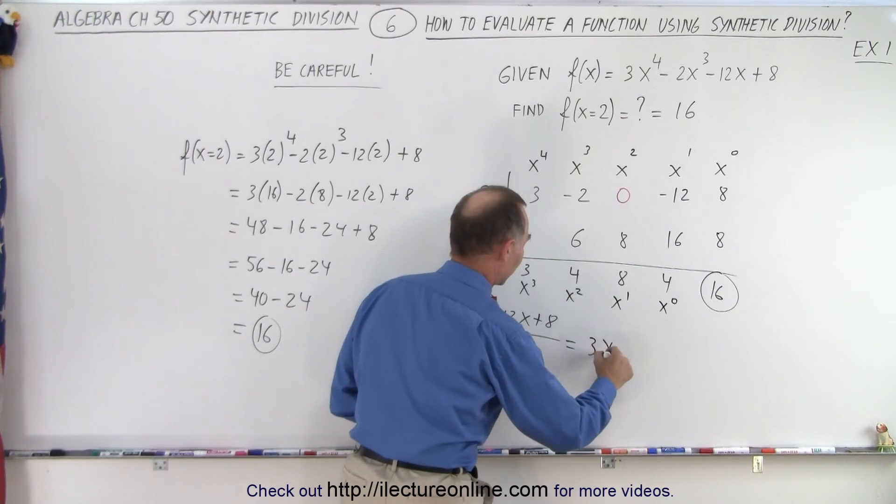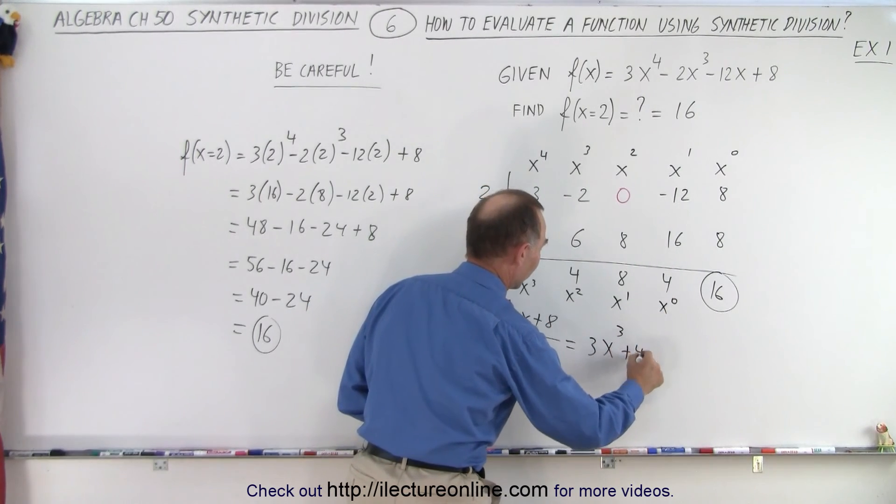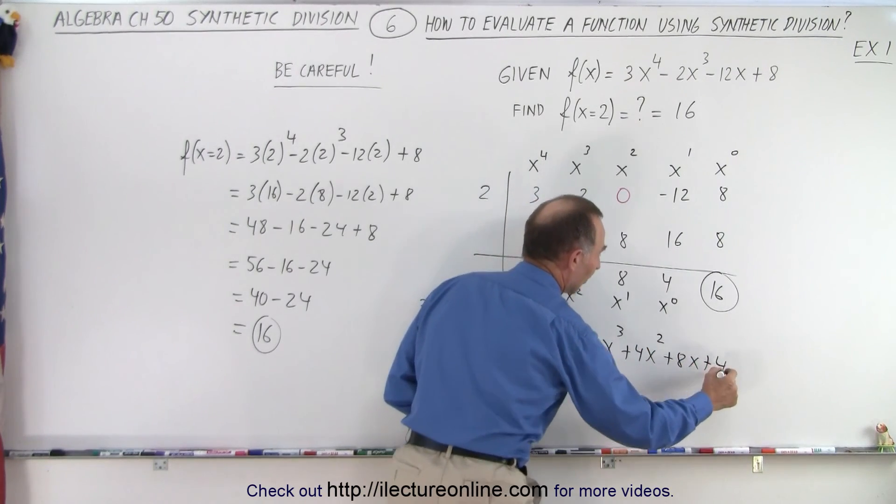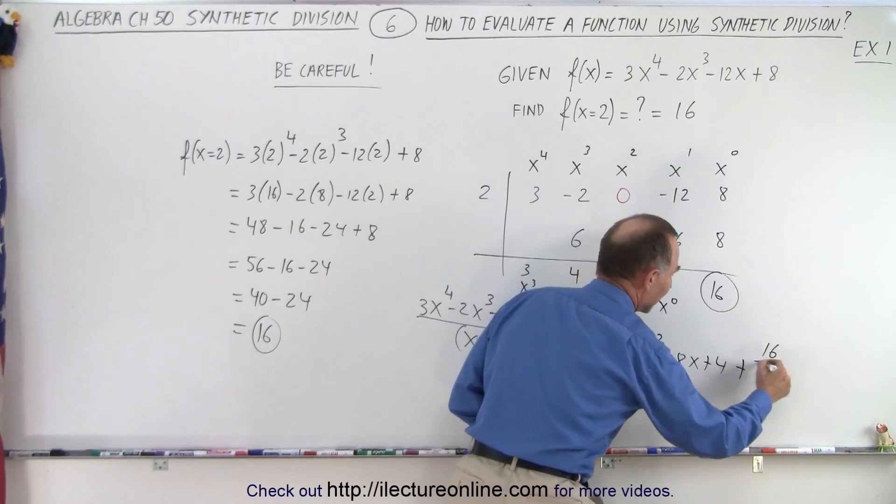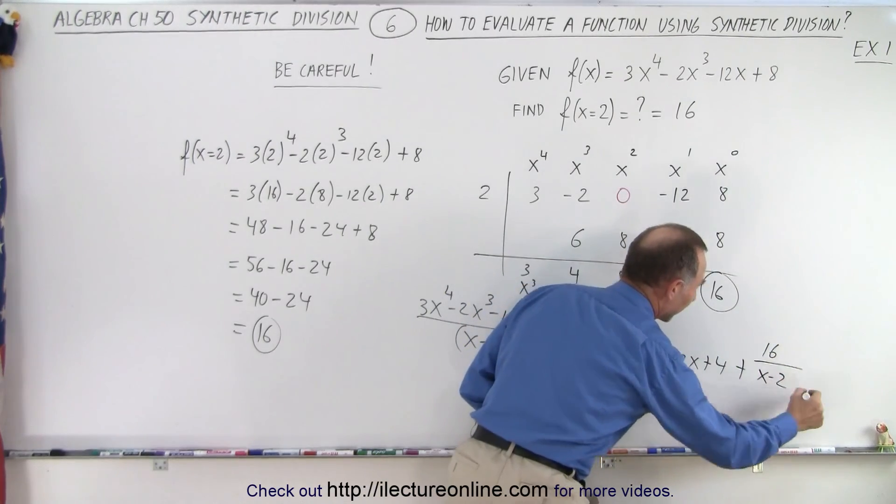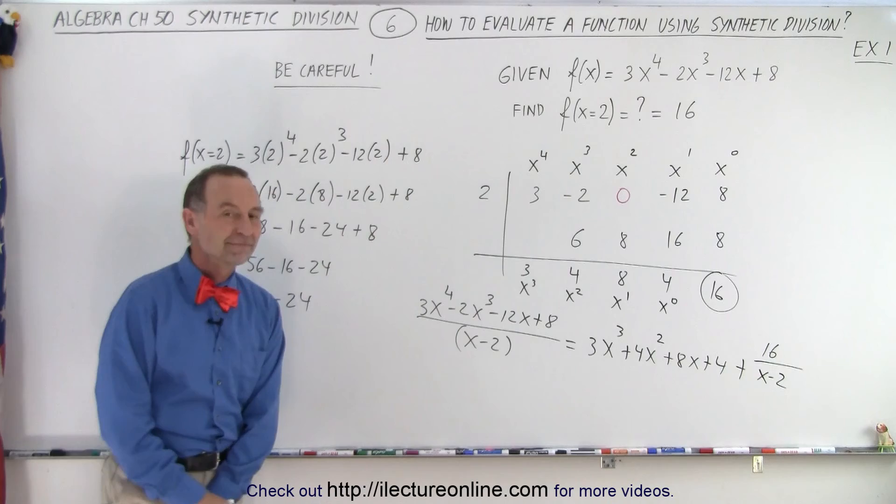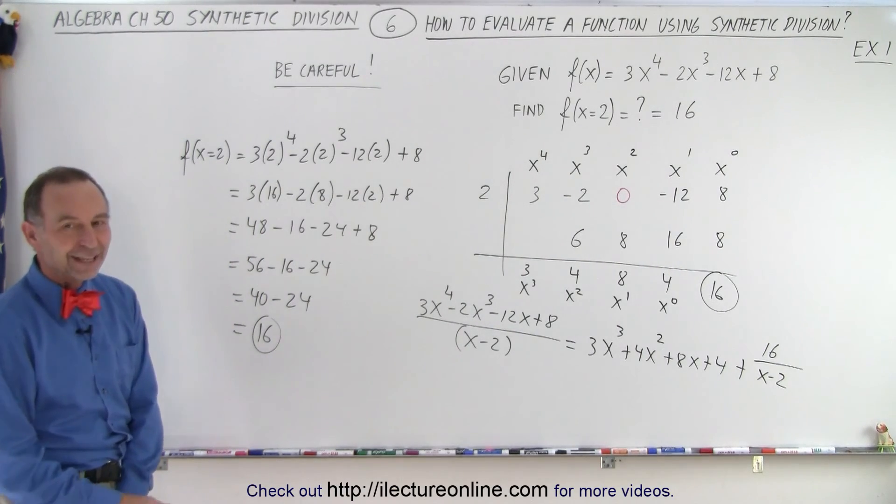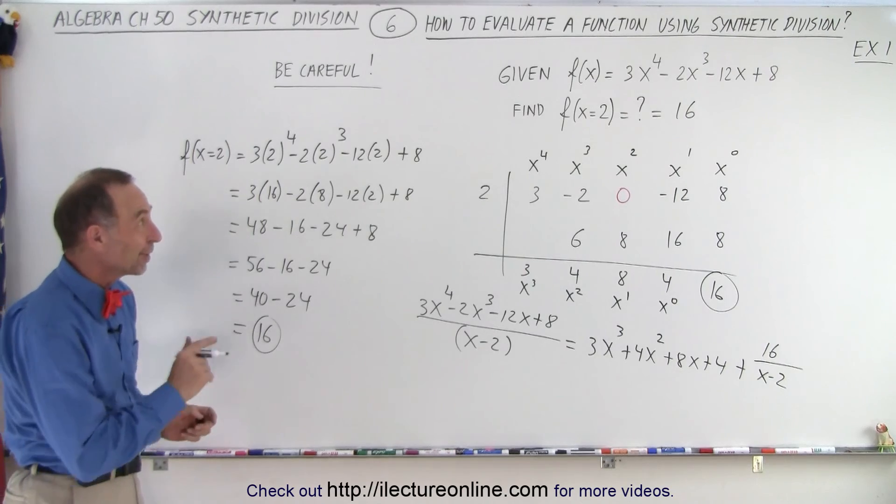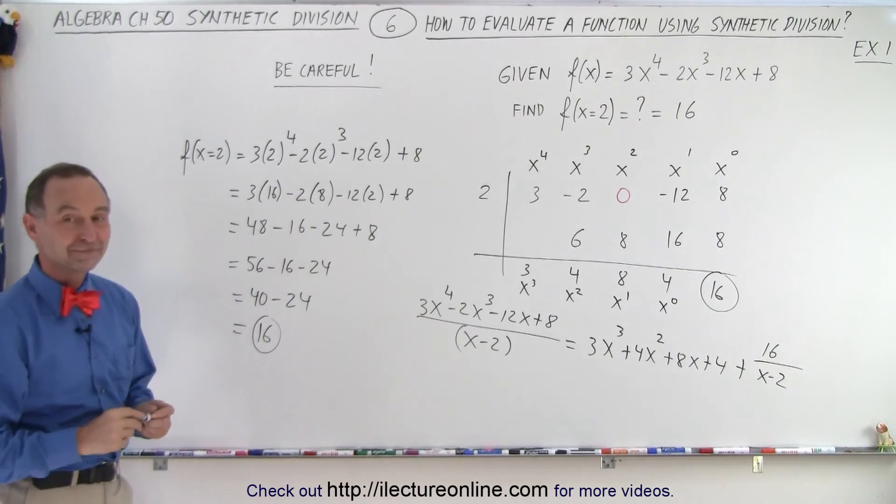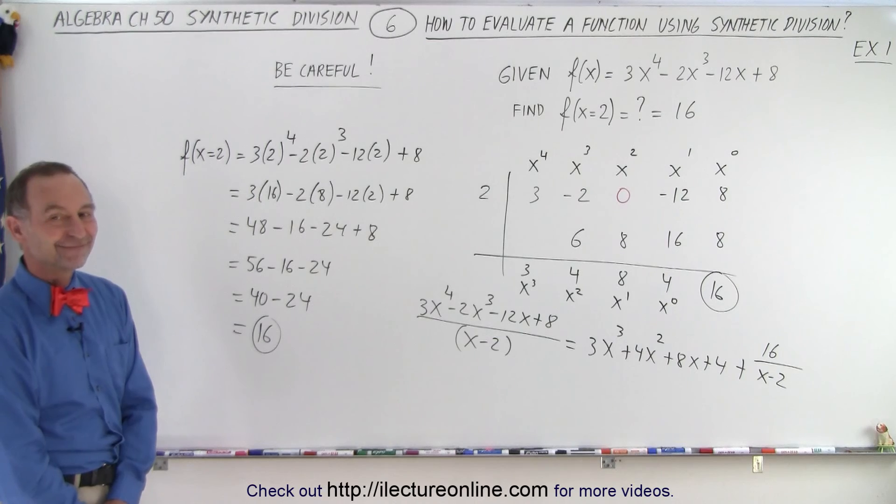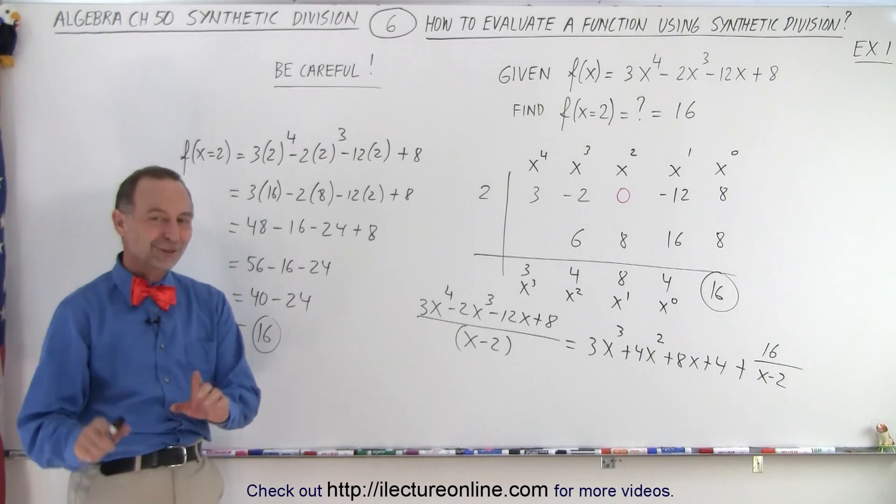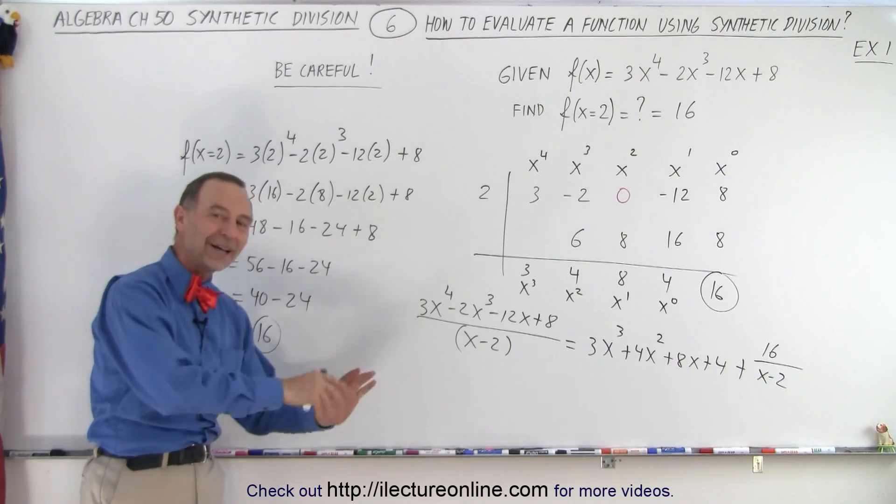So you'll end up with 3x cubed plus 4x squared plus 8x plus 4 plus the remainder of 16 divided by x minus 2. That's right. So that remainder gives you the value of the function when it's evaluated at x equals 2. Does that show any significance? Oh, it does show some significance, and you'll see in just a few videos why it works that way.